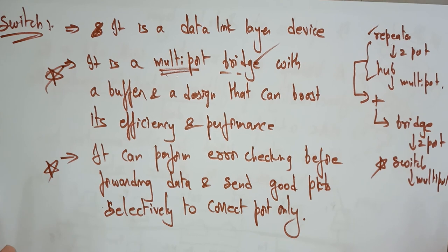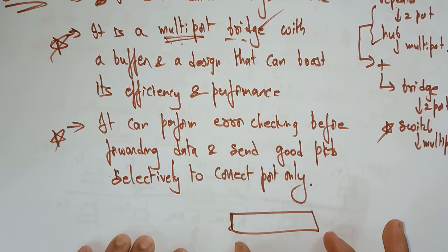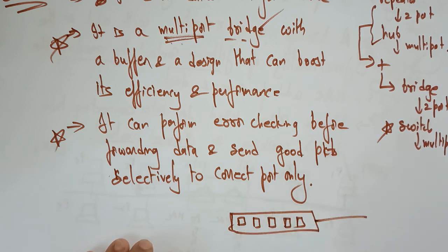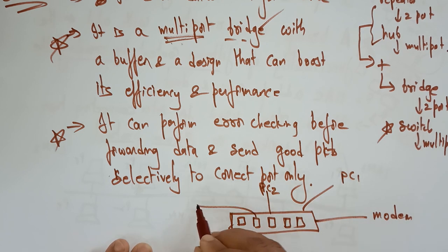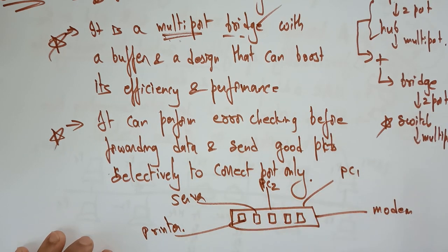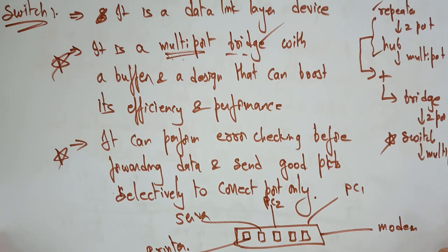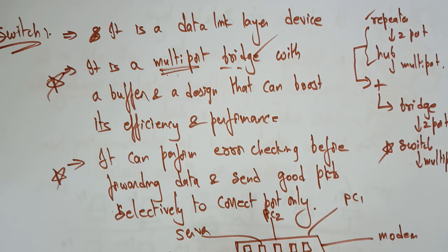So the switch is just like a bridge, but instead of two ports, it has multiple ports. It can connect devices over the local area network — modem, PC1, PC2, server, and printer can all send data at the same time, with data received only by the destination device, not others. In the next video, we will continue with more networking devices. By watching all three videos, you will get clarity on what exactly network devices are. Thank you.